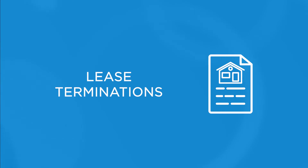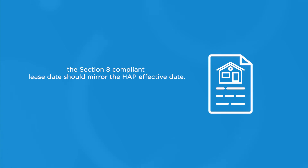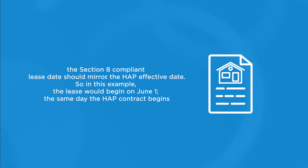There are two main things to remember about lease terminations. First, all public housing residents should have leases terminated the last day of the month prior to the HAP effective date. For example, if the HAP effective date is June 1st, resident leases should be terminated on May 31st. Secondly, the Section 8 compliant lease date should mirror the HAP effective date, so the lease would begin on June 1st, the same day the HAP contract begins.